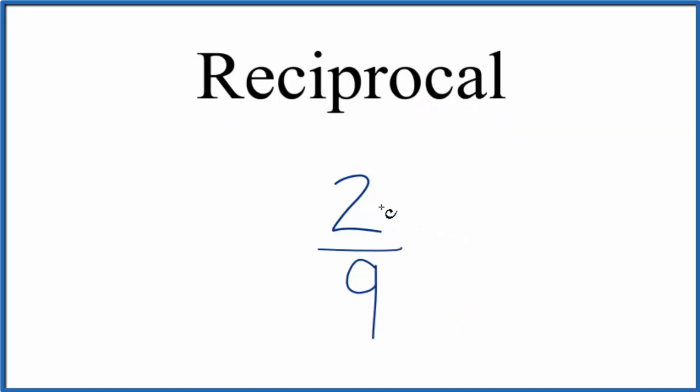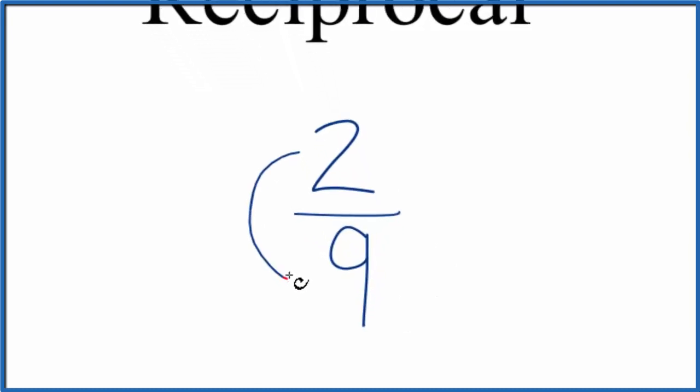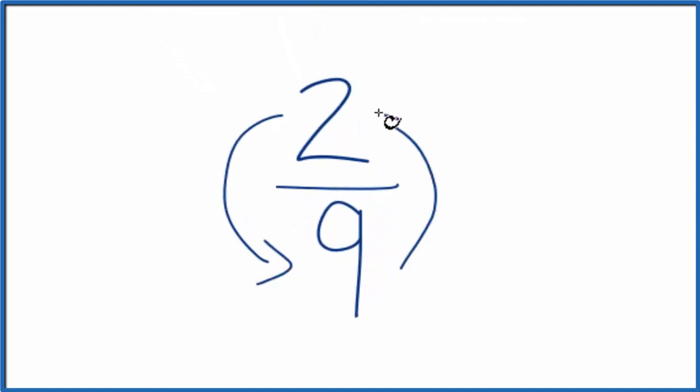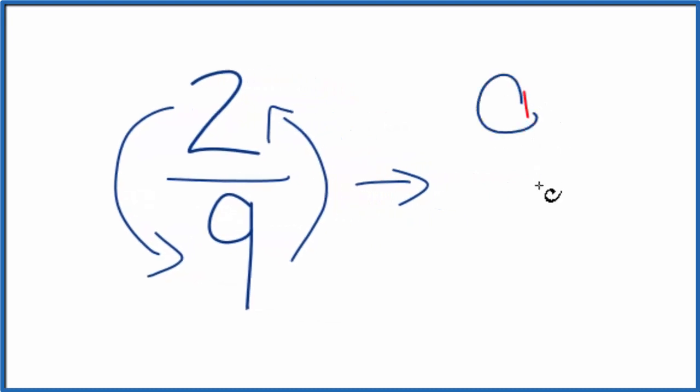So when we're finding the reciprocal, we take the numerator and we flip it with the denominator. So the two goes down on the bottom and nine goes to the top. We end up with nine as the top and two as the bottom.